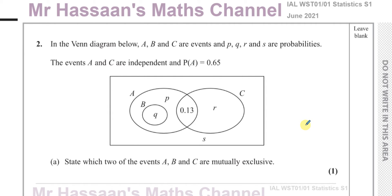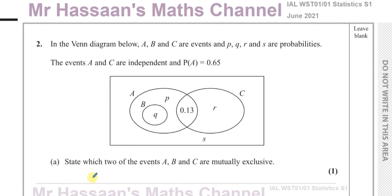Events which are mutually exclusive — it's impossible for them to occur at the same time; there is no intersection between them. In a Venn diagram, mutually exclusive events have no intersection at all. Looking at A and B, B is completely contained within A so there is an intersection. A and C also have an intersection. But B and C are completely separate — there is no intersection between circle B and circle C.